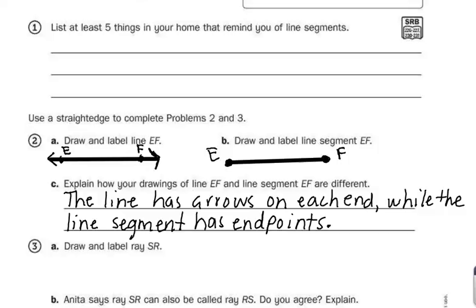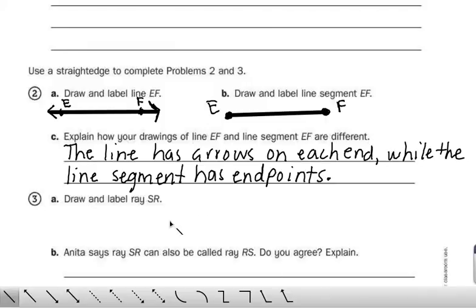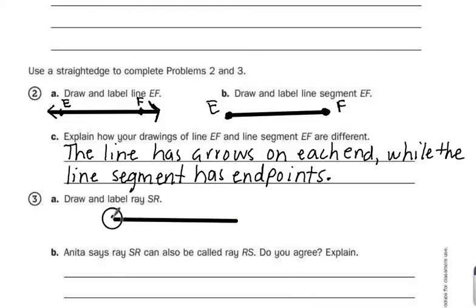Number three, draw and label ray SR. So I'm going to start by using my straightedge. A ray, remember, has one endpoint, and then goes on forever in the other direction. It also cannot be measured. Because this is ray SR, the first letter, S, is my endpoint. So S, and then I'm going to put another point on this ray, R.